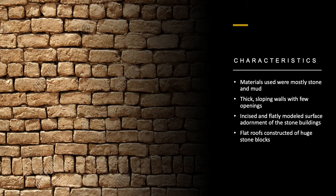Another characteristic is thick sloping walls with few openings, which was a method needed for the construction of mud walls. There are also incised and softly modeled surface adornments of stone buildings, inspired from mud wall ornamentation, and flat roofs constructed of huge stone blocks supported by external walls and closely spaced columns in order to bear the heavy weight of stone.